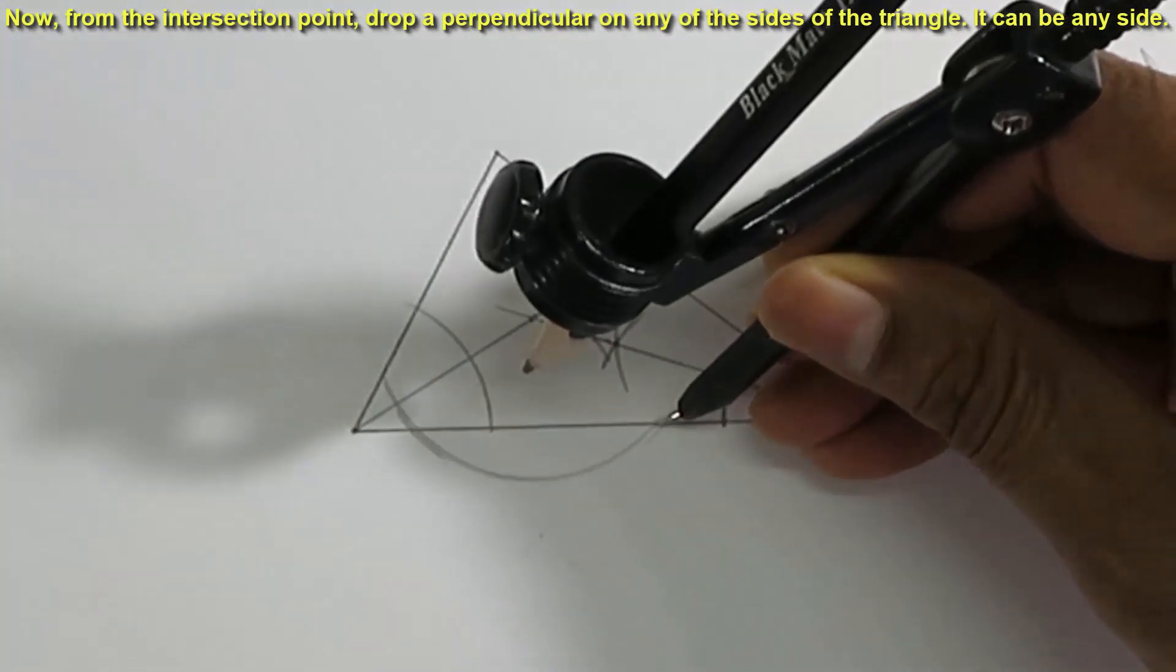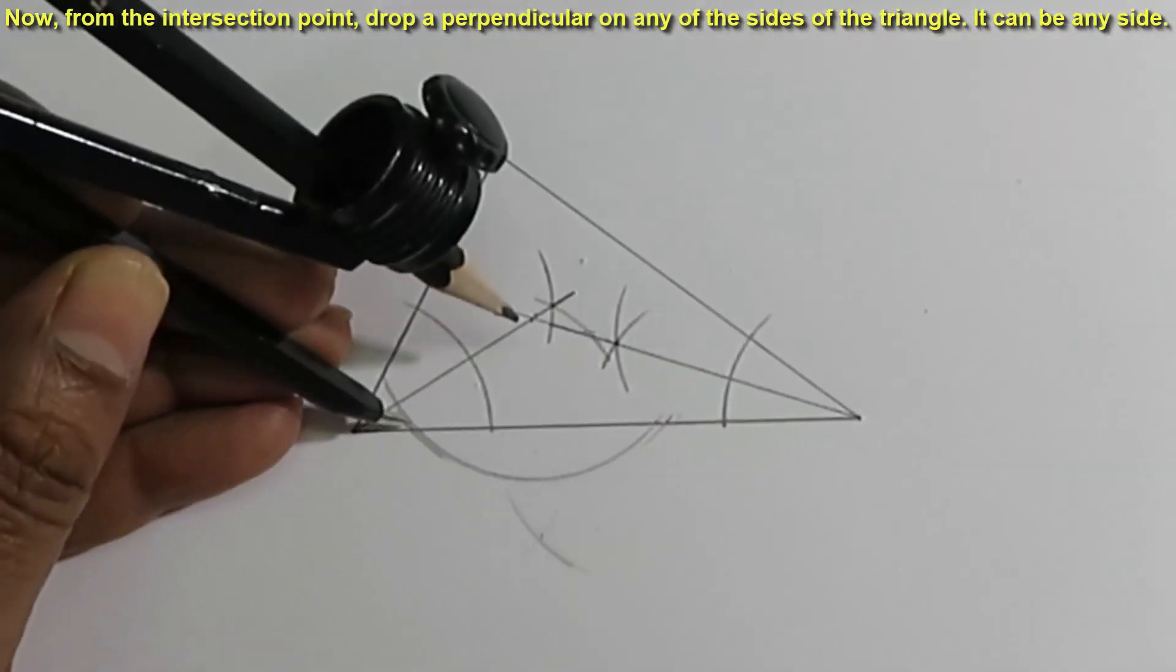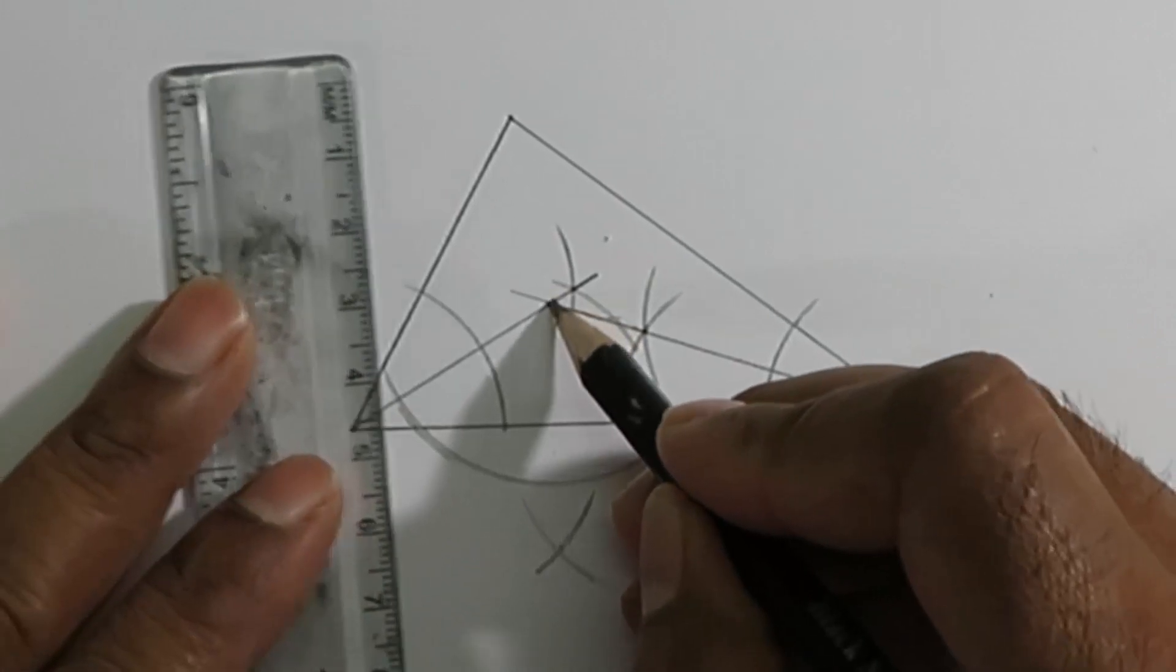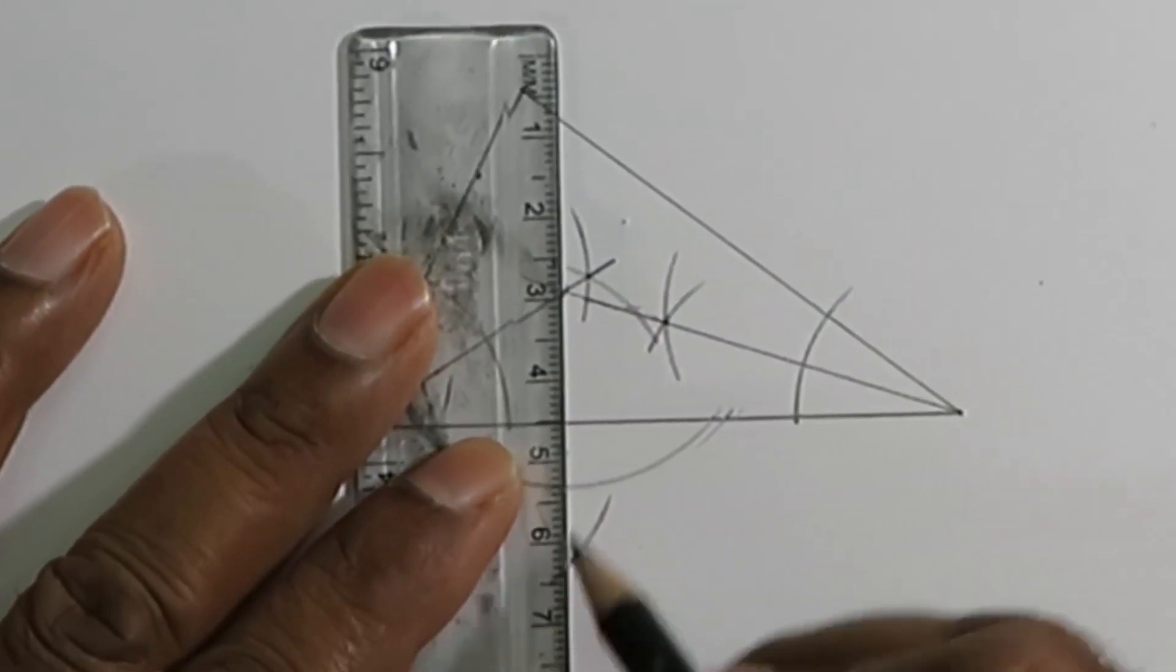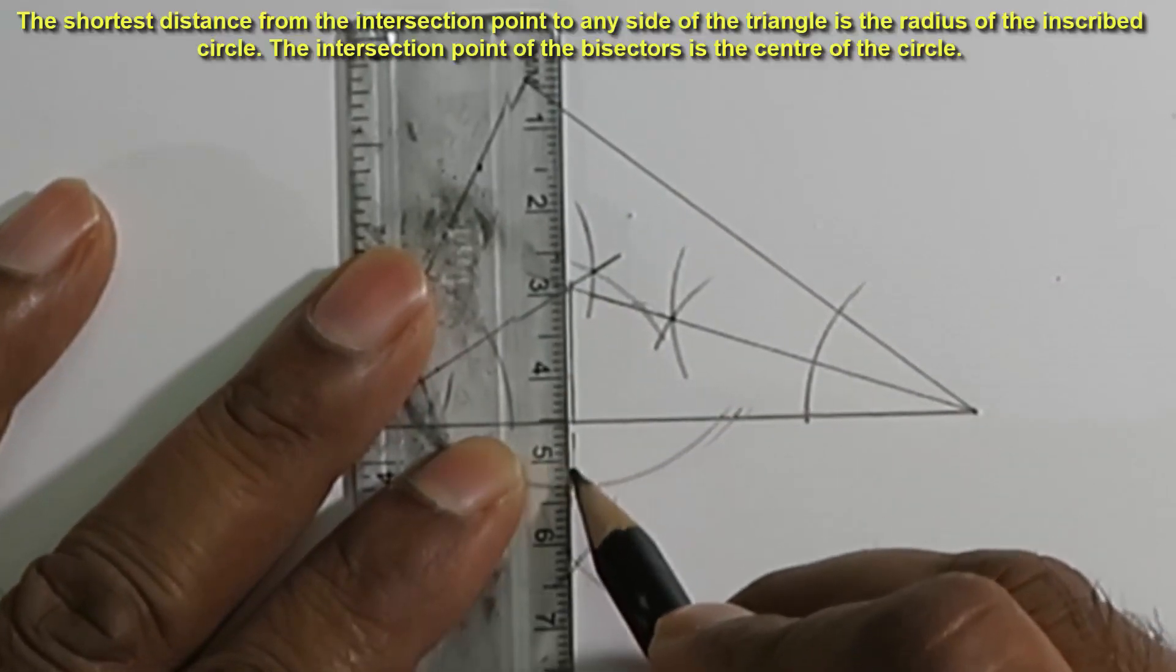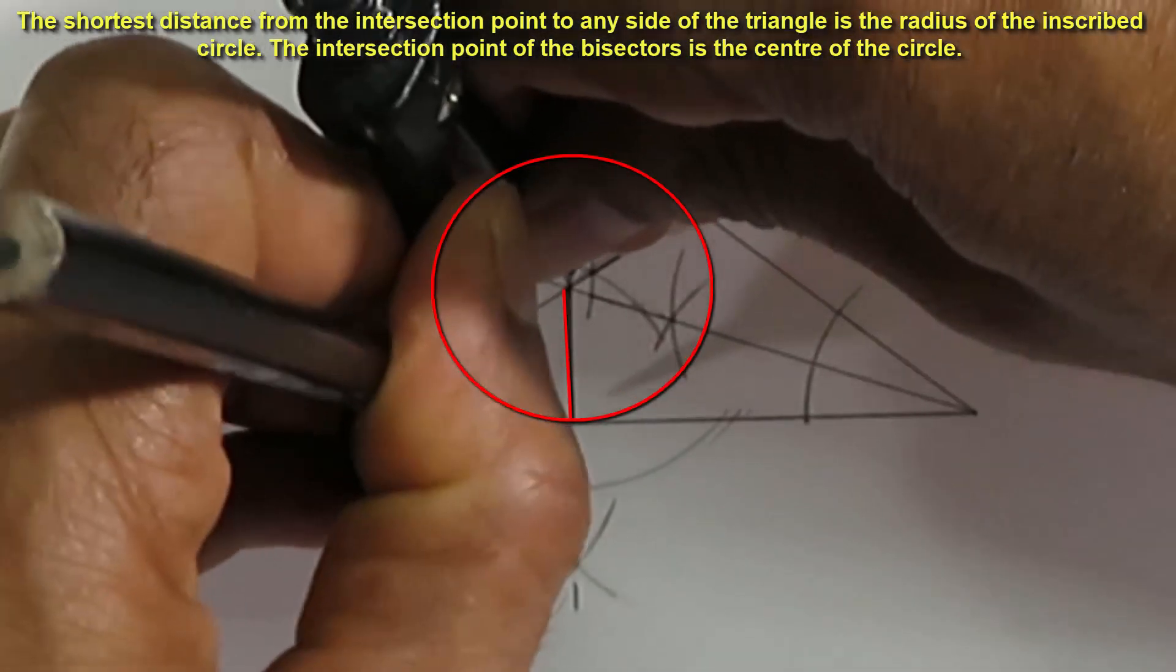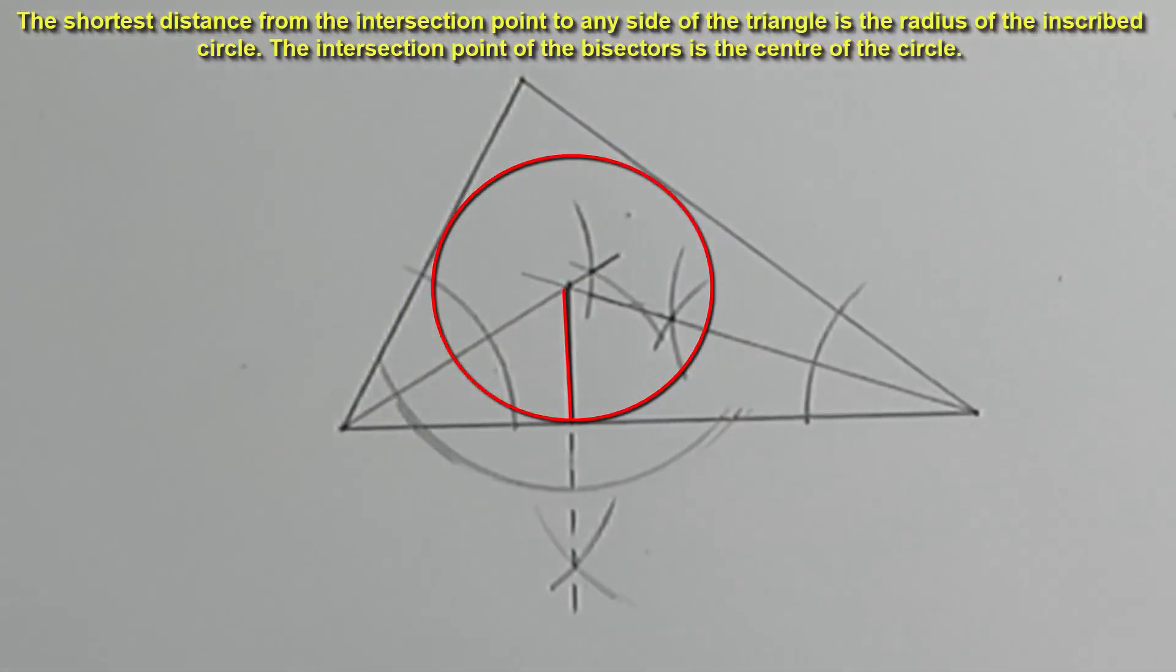Now, from the intersection point, drop a perpendicular on any of the sides of the triangle. It can be on any side. The shortest distance from the intersection point to any side of the triangle is the radius of the inscribed circle. The intersection point of the bisectors is the center of the circle.